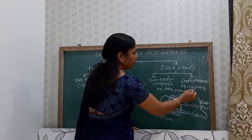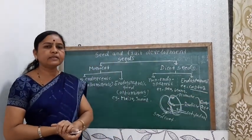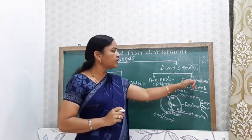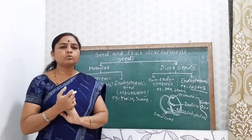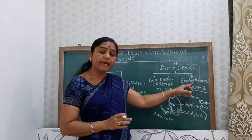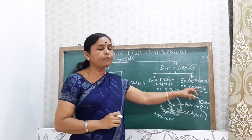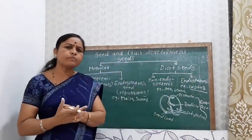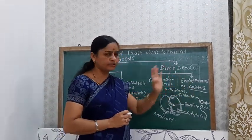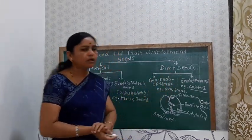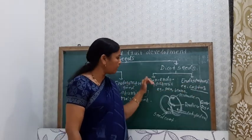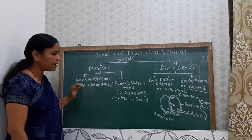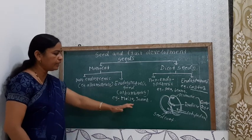In the endospermic dicot seed, such as castor, there are two cotyledons but these cotyledons are thin and papery, while the endosperm is thick because food is stored in the endosperm. In this type of seed, the endosperm remains as it is and the cotyledons are papery. So castor is an example of an endospermic dicot seed.